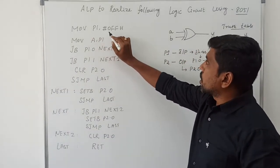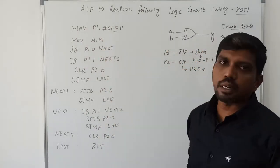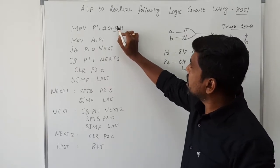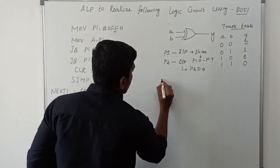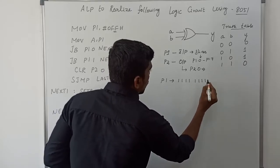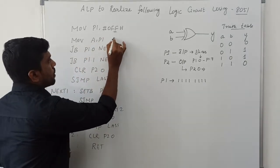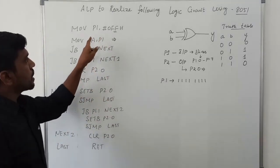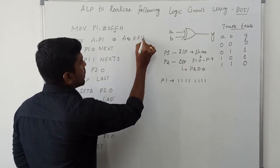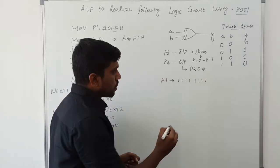The first instruction is MOV P1, #0FFh. The pound symbol represents that this is an immediate value. After execution of this instruction, FFh is transferred to P1, so Port 1 value is FFh — all ones. Then MOV A, P1 transfers whatever value is present in Port 1 into the accumulator register, so accumulator content becomes FFh.